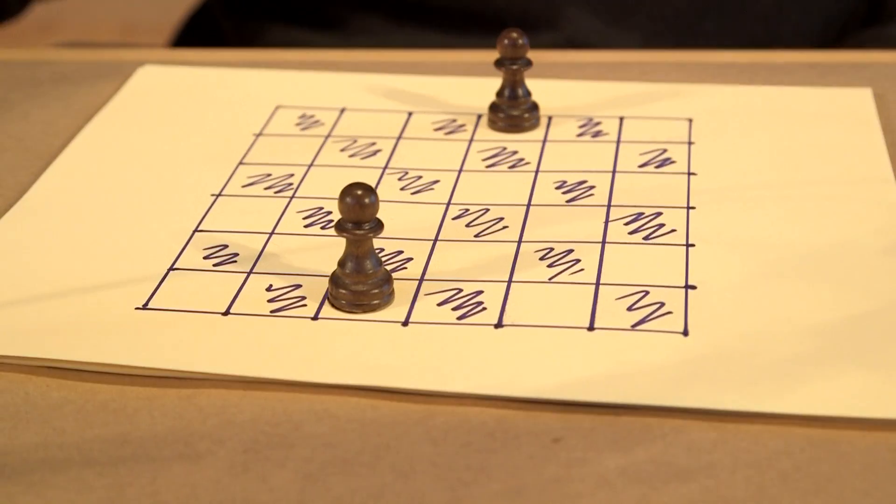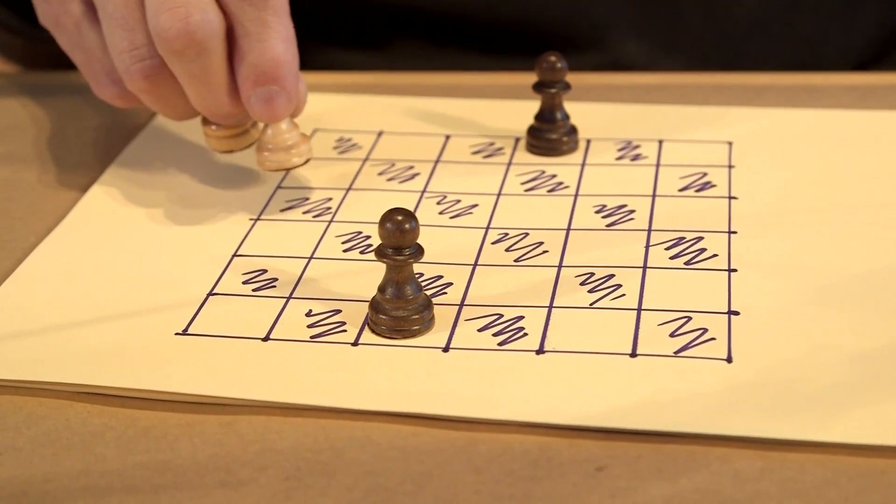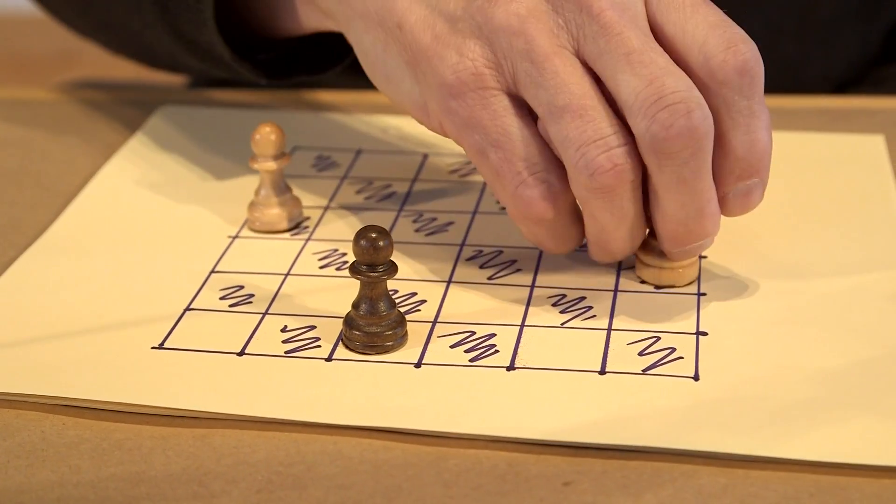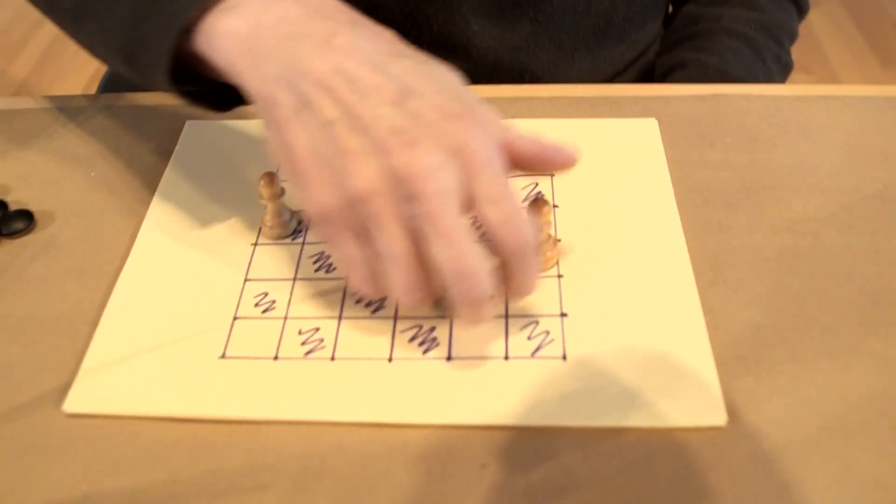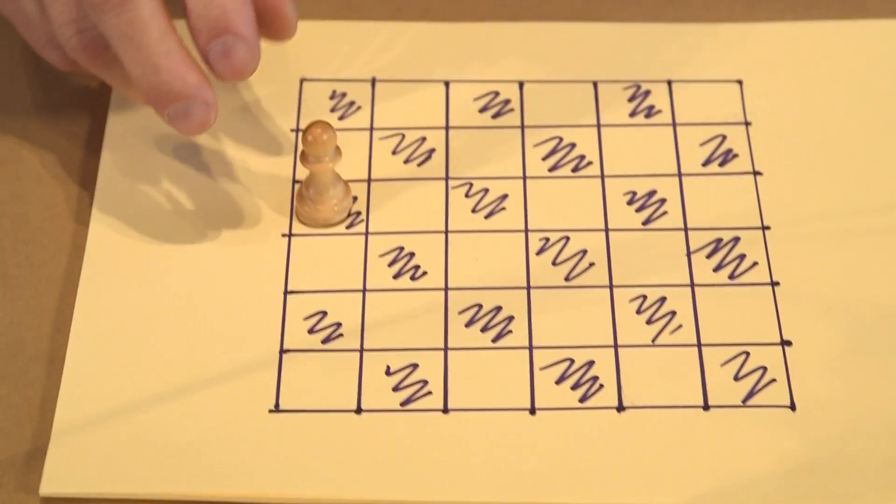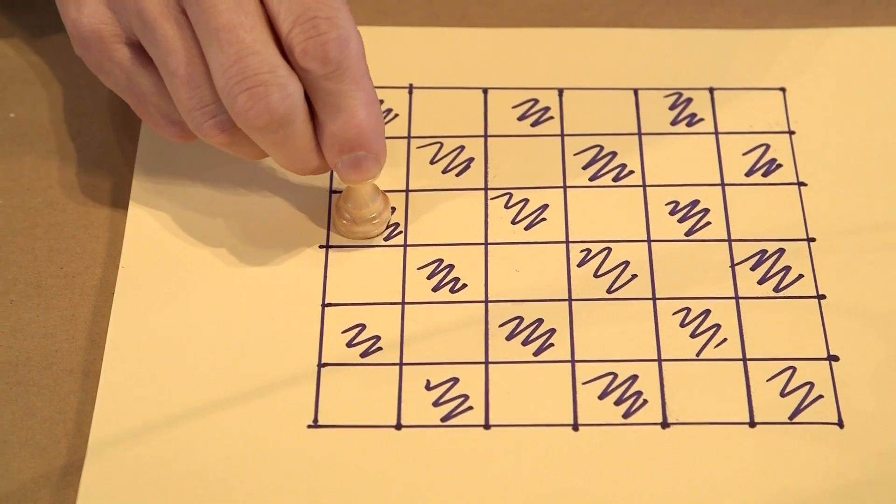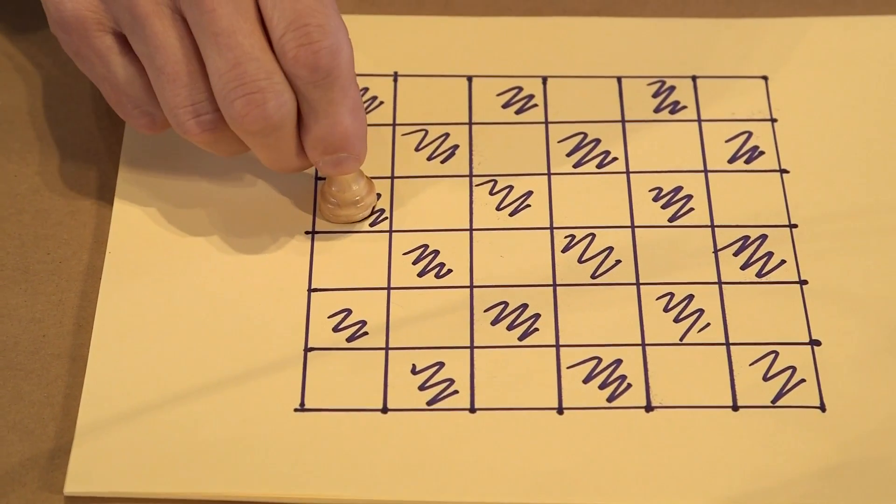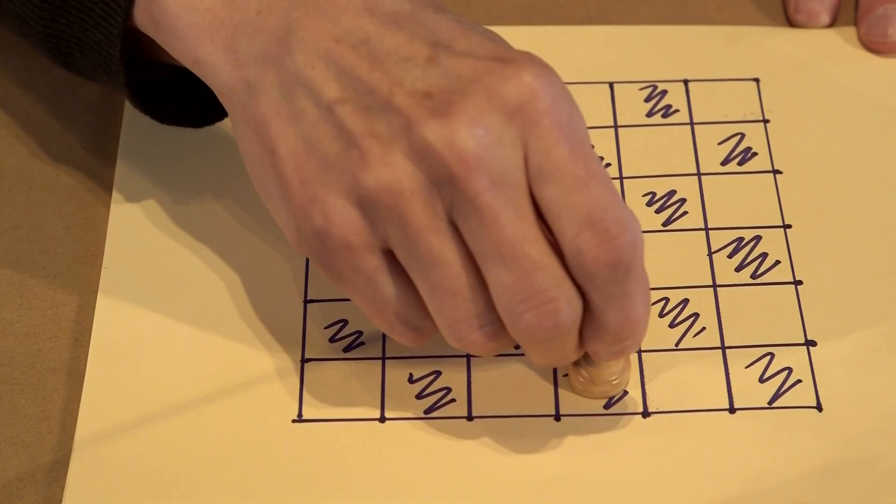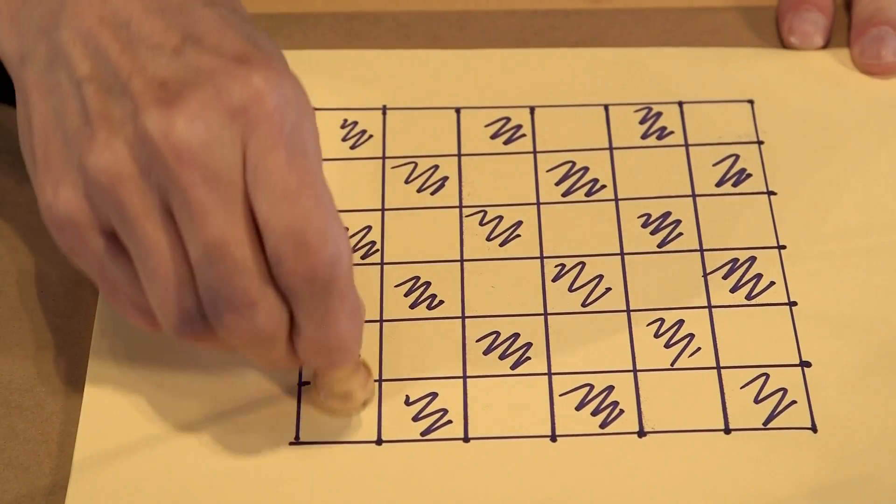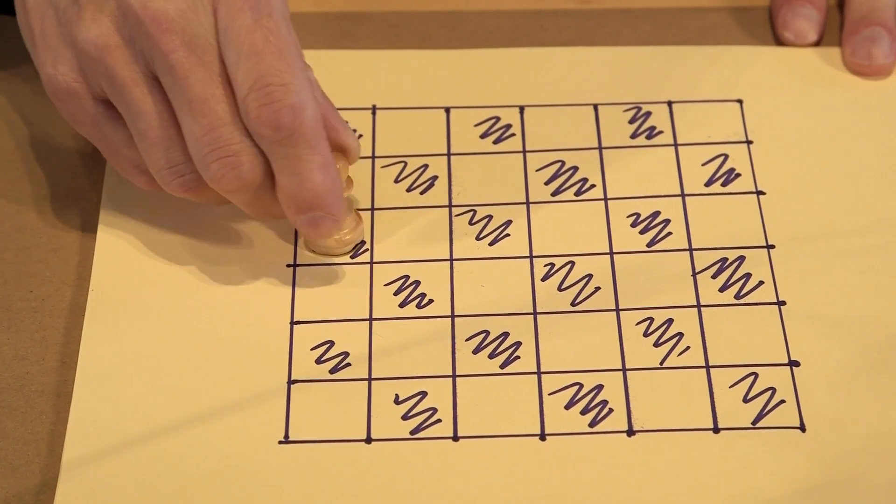There's two black pieces and two white pieces and there are various possible starting configurations. This is one that I like. A legal move is by an Amazon. If you choose to move this Amazon, you can go as far as you want in any direction, either diagonal or horizontal or vertical, like a chess queen.